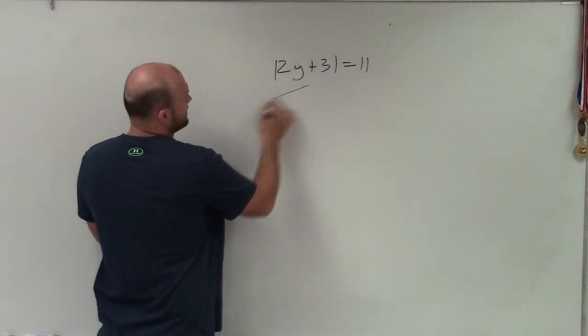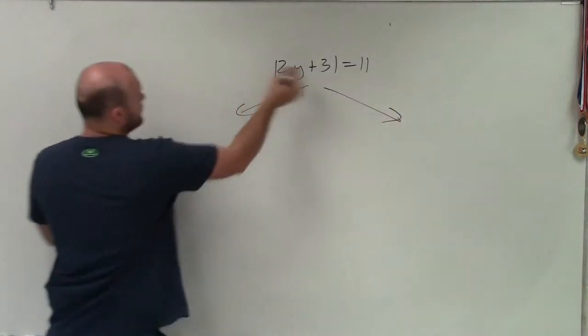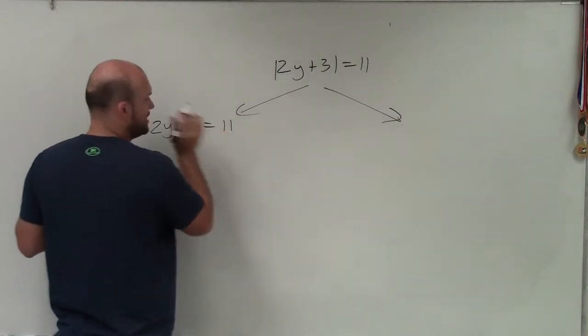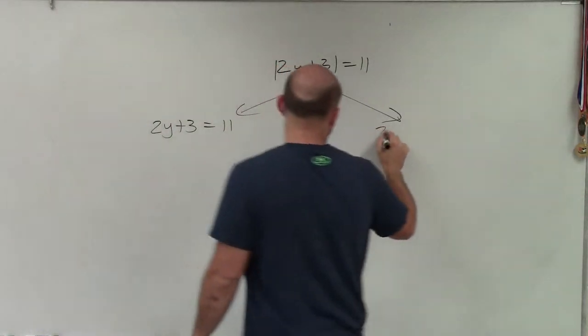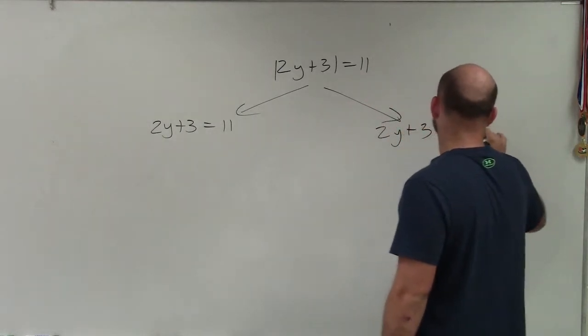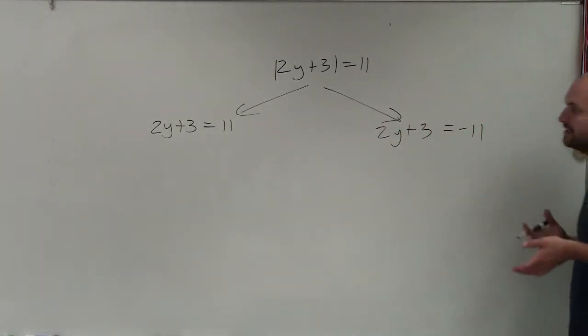So to do that, we're going to say, well, let's eliminate and let's just pretend that the value inside my absolute value made positive. And then let's pretend, well, what if that exact same value was negative? All right, what could our two values be?